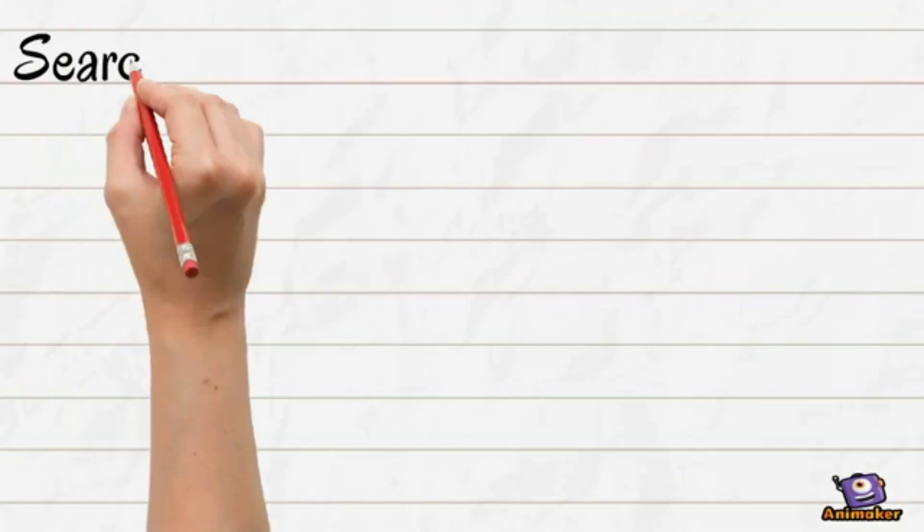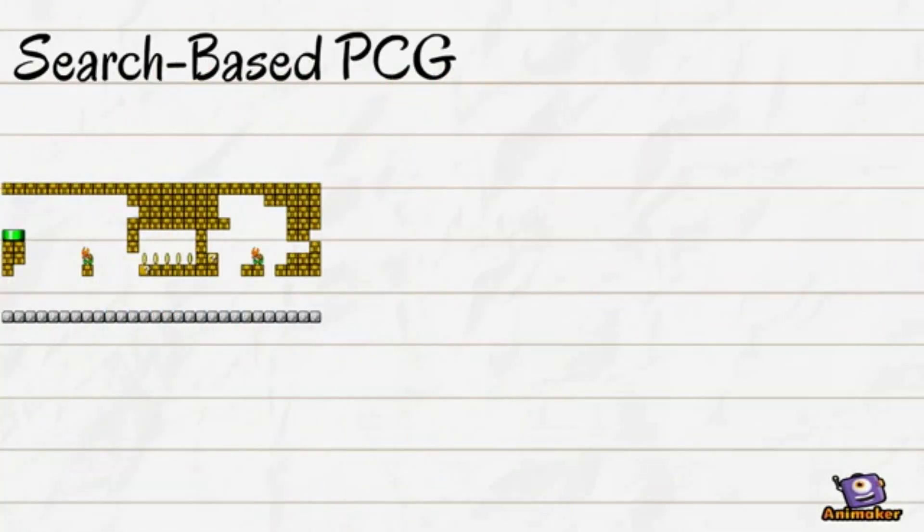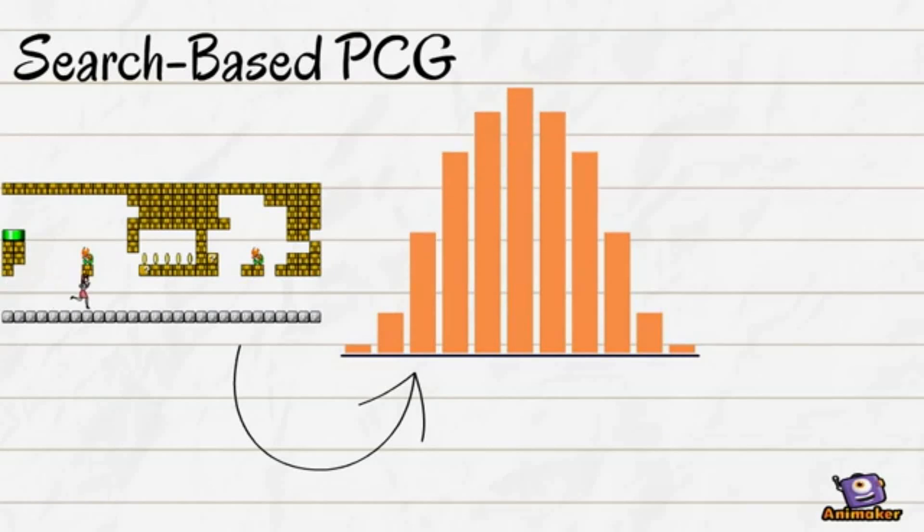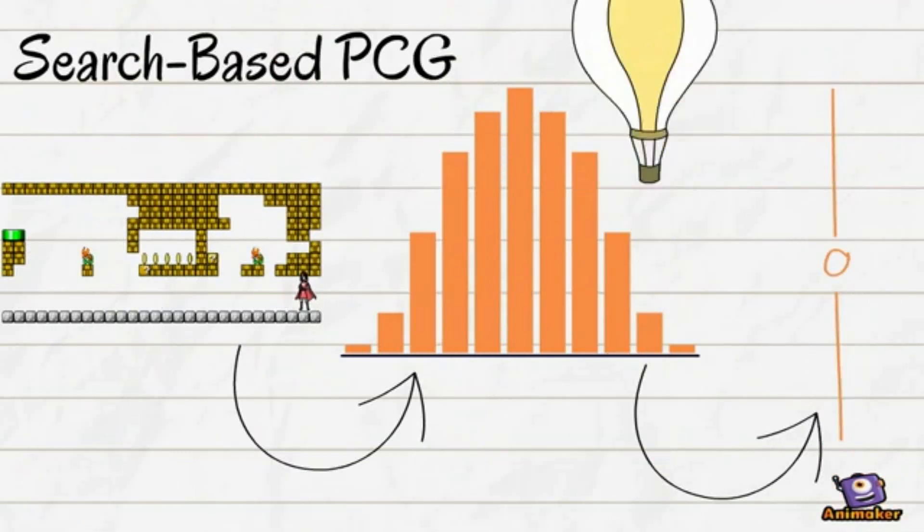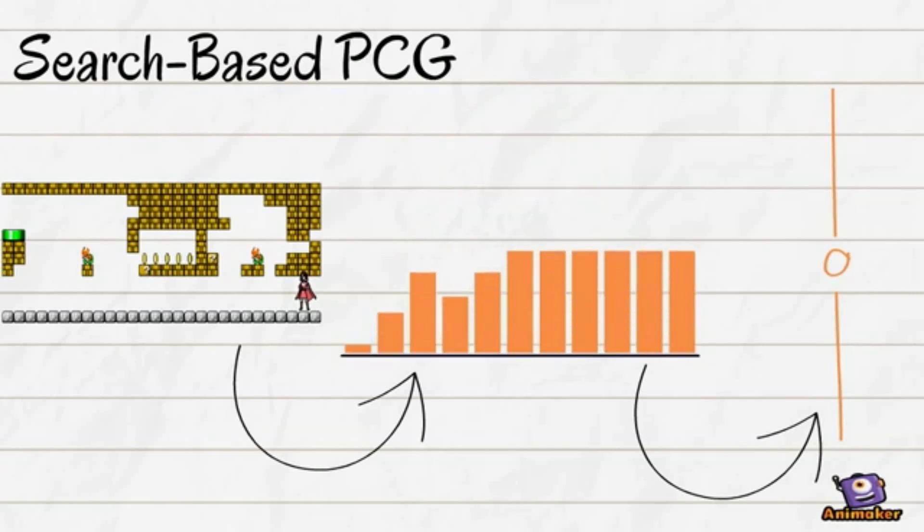Speaking of search-based PCG, fitness functions are often noisy if they are based on playthroughs. Noise can also be modelled with confidence intervals and can thus be handled with the same partial-order-based selection. Also works for non-symmetric uncertainties.